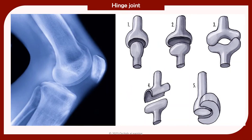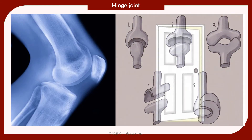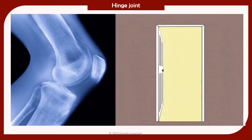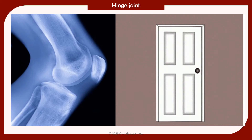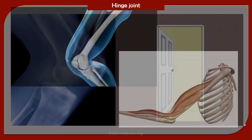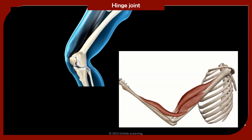A hinge joint provides back and forth movement, similar to the hinges of a door. Examples of hinge joints are the joints at the knee and the elbow.